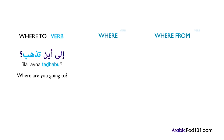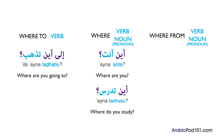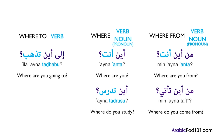The grammatical rule for 'where to' is that it should always be followed by a verb, whereas 'where' and 'where from' can be followed by both a verb or a noun. For example: أين أنت؟ — أين followed by a noun. أين تدرس؟ — أين followed by the verb تدرس (where do you study?). من أين أنت؟ — where are you from? And من أين تأتي؟ — where do you come from?